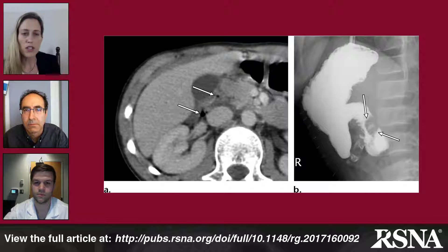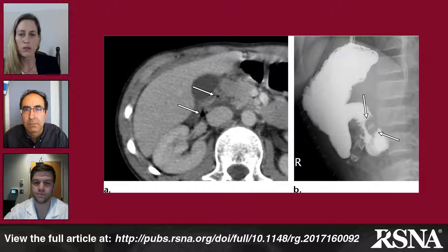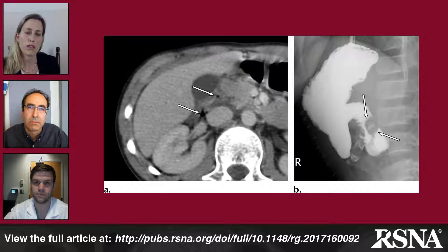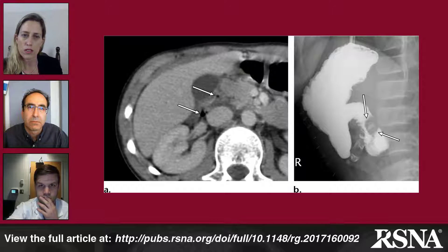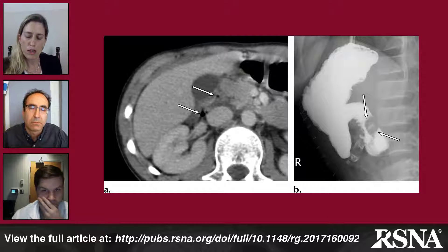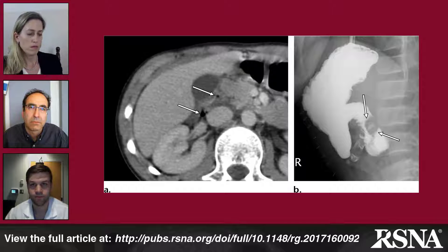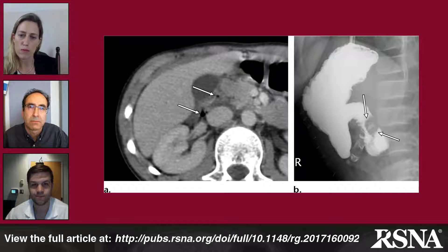The location of free air is something worth highlighting — it can be telling as to which portion of the bowel is injured. Retroperitoneal air would classically be associated with injuries to the second through fourth portion of the duodenum, and the ascending and descending colon. The remainder of the bowel is intraperitoneal, so the location can help distinguish which loop of bowel might be affected.